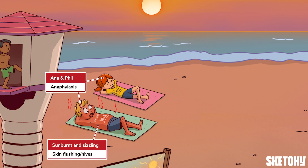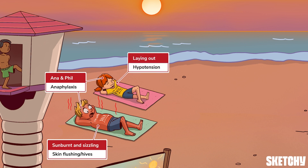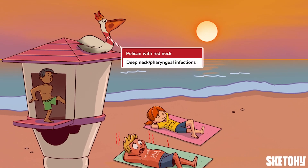Anaphylaxis may be triggered by food, environment, or medications, and will appear as skin flushing or hives — represented by Phil's sunburn — hypotension, represented by their laid-out positions, and wheezing or stridor, or a completely compromised airway. Once you can breathe again, Phil, you might consider some sunscreen.